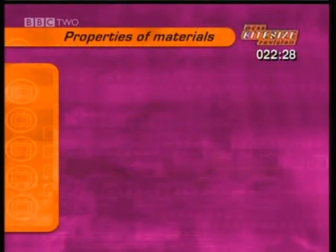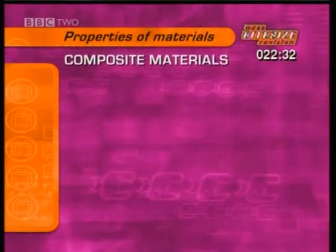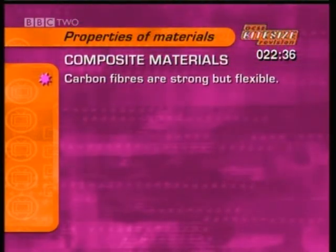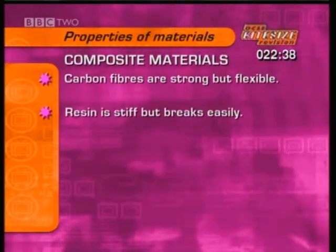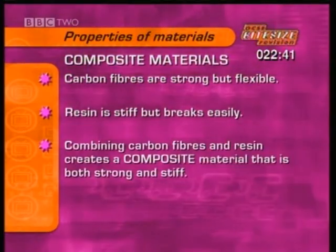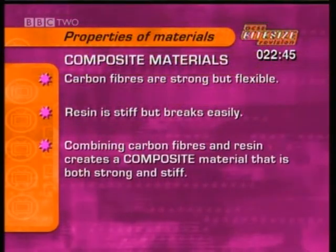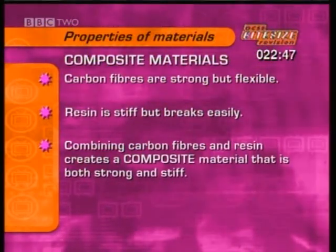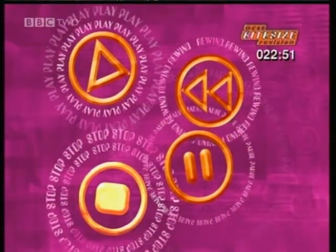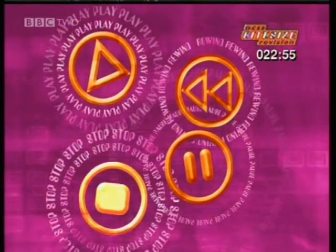We also saw how materials can be modified and combined to create composite materials. Carbon fibres are strong but flexible, while resin is stiff but breaks easily. Combining the two materials creates a composite material that is both strong and stiff. That's the end of the whole section on classifying materials.